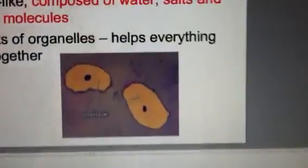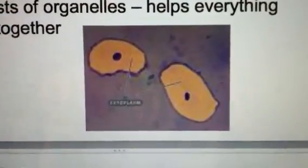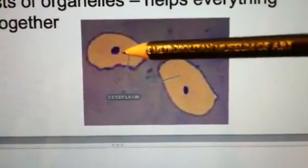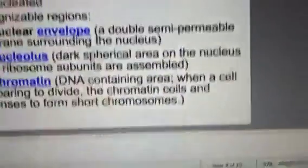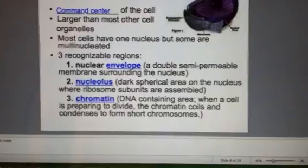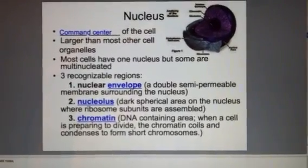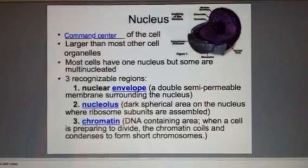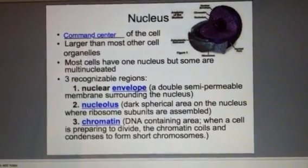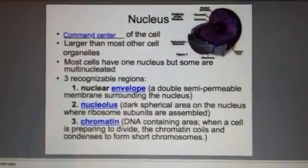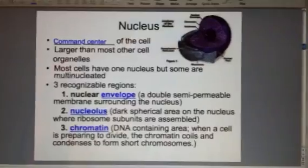The nucleus was stained in the center of the slide, and that's sometimes all you'll see at 40x under a microscope in the lab. Most cells have at least one nucleus, but sometimes cells have more than one, and those would be known as multinucleated. There are three recognizable regions in the nucleus.